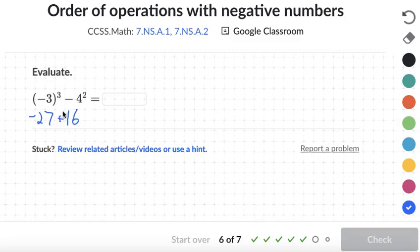Let's add the opposite. So it's negative 27 plus negative 16. It's an addition problem. The signs are the same. So we'll go ahead and add those two numbers and get negative 43.